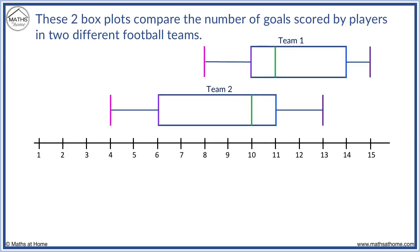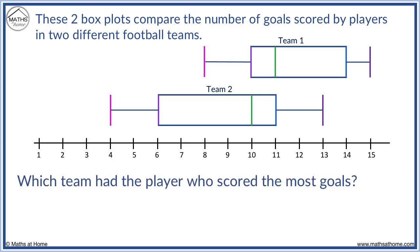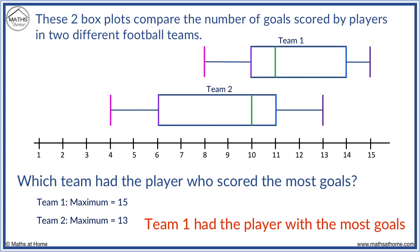These two box plots compare the number of goals scored by players in two different football teams. Which team had the player who scored the most goals? We need to see the maximums in each team. In Team 1, the maximum is 15. In Team 2, the maximum is 13. Team 1 has someone who scored 15 goals, so Team 1 had the player with the most goals.